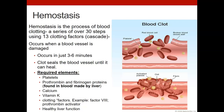Blood clotting occurs any time a blood vessel is damaged — even a tiny damage up to a large gushing damage. It's pretty fast; it occurs in about three to six minutes if you have all of the normal clotting factors available. What the clot does is seal the blood vessel until the blood vessel can heal itself.